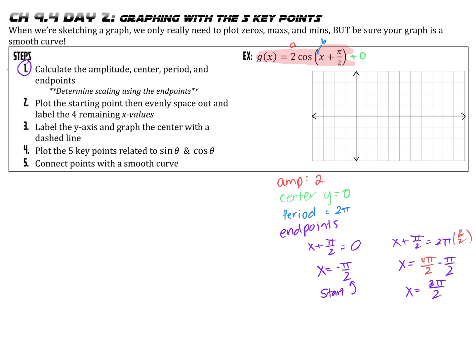Step 1: calculate all the key information — amplitude, center, period, and endpoints. This helps us determine how to adjust and label our graph. I'm going to go ahead and graph the center, which is the line y equals 0. This helps me make adjustments for my amplitude, which tells me how high and how low my graph goes from the center line. If the amplitude is 2 and it's centered at 0, the highest the graph goes is positive 2 and the lowest is negative 2. I'll label that to help with max and min values. Since we start at negative pi over 2, I'll mark that as 2 lines over.